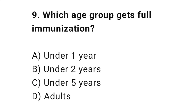Question number nine: which age group gets full immunization? The right answer is C — under five years. Children under five are targeted to prevent childhood diseases.